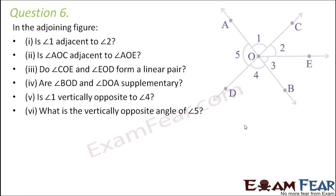Let us look at question number 6. In the adjoining figure, is angle 1 adjacent to angle 2? This is angle 1 and this is angle 2. They seem to be located side by side. They have a common vertex — yes. They have a common arm — yes, this is their common arm OC. And they do not have common interior points: for angle 1 the interior region is this, for angle 2 the interior region is this. So angle 1 and angle 2 are adjacent.